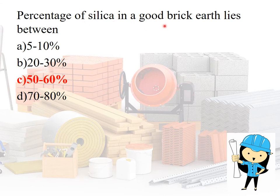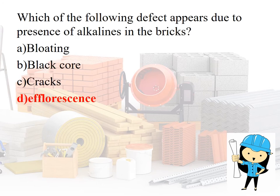The percentage of silica in good brick earth lies between 50 to 60%. If they ask about alumina, the answer is 20 to 30%. To recap: silica is 50 to 60%, and alumina is 20 to 30%.